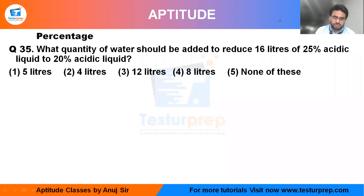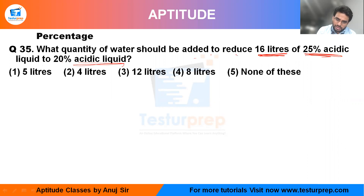This is question number 35, in which: what quantity of water should be added to reduce 16 liters of 25% acidic liquid to 20% acidic liquid? Let me take the ratio — one is acid and the second is water. This is 25% acidic.